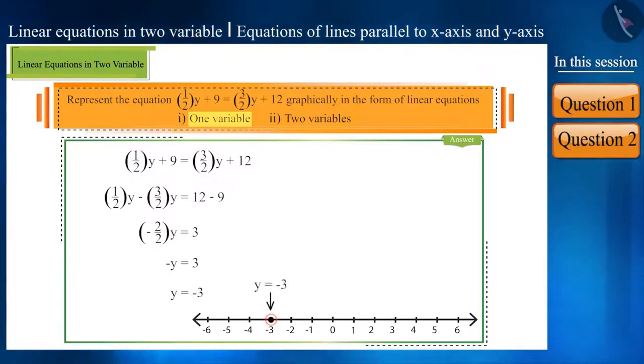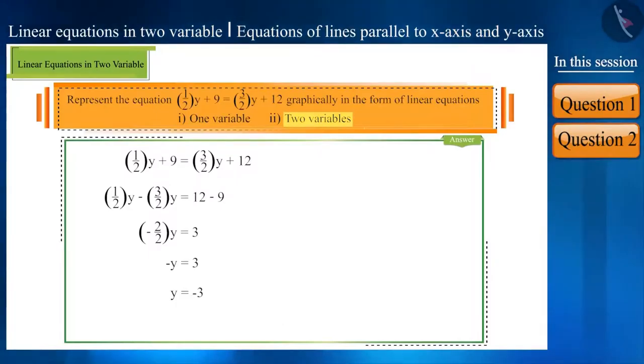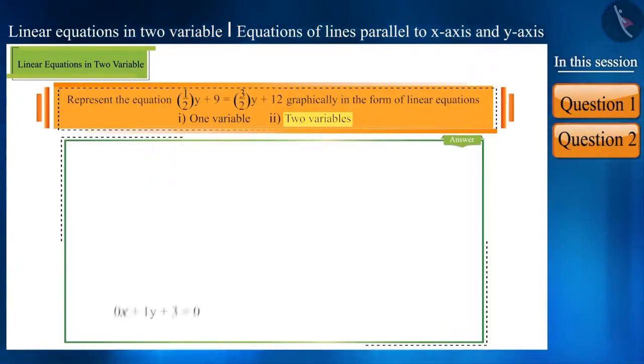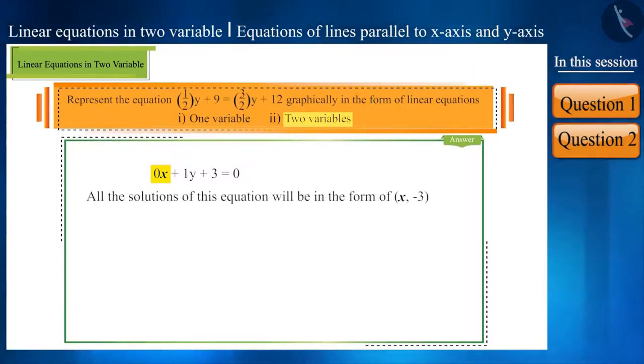We have not yet solved this question completely. We now have to represent it in the form of linear equations in two variables and it will be 0x plus 1y plus 3 is equal to 0. Observe this equation. Here, if we take any value for x, it will ultimately be 0. All the solutions of this equation will be in the form of x minus 3, where x is a real number.